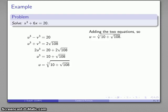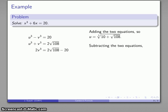And then similarly, if I subtract the two equations, if I take this equation here and subtract u³ - v³, then the u's drop out. My v³ minus a negative v³ becomes 2v³, and the constant terms become what they are, and I can solve for v. And so I get v equals cube root of √108 - 10.